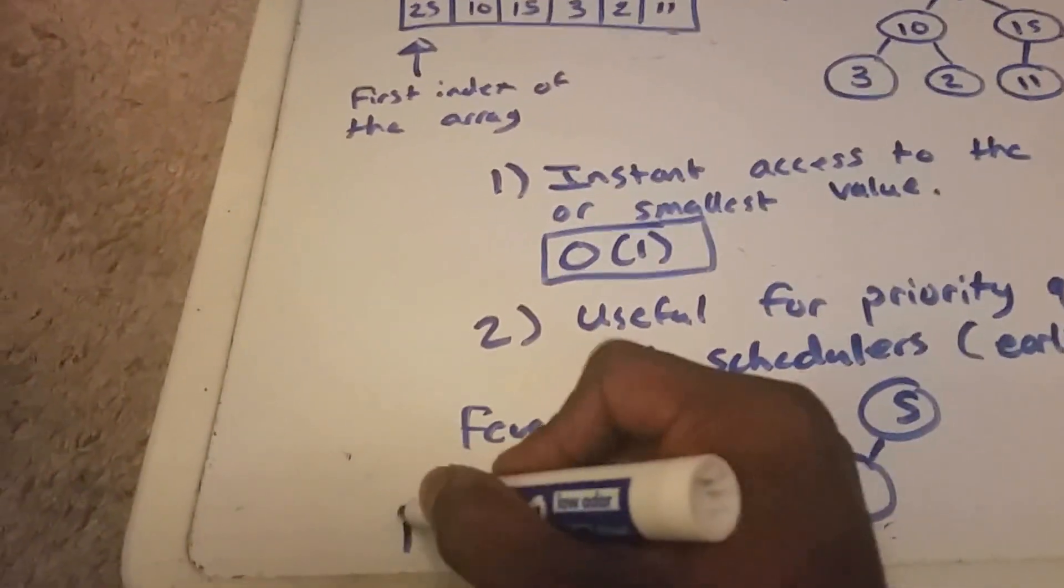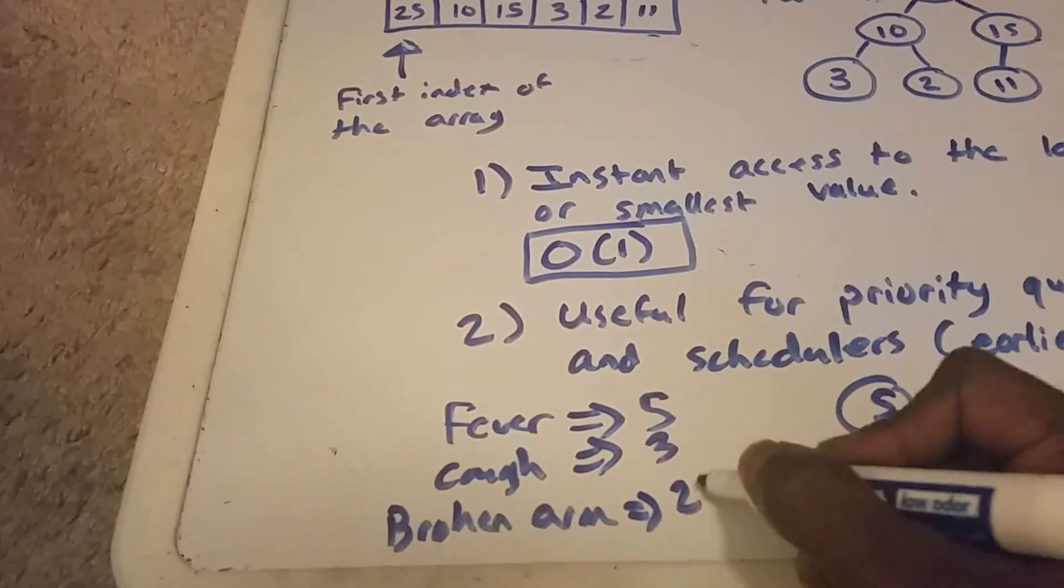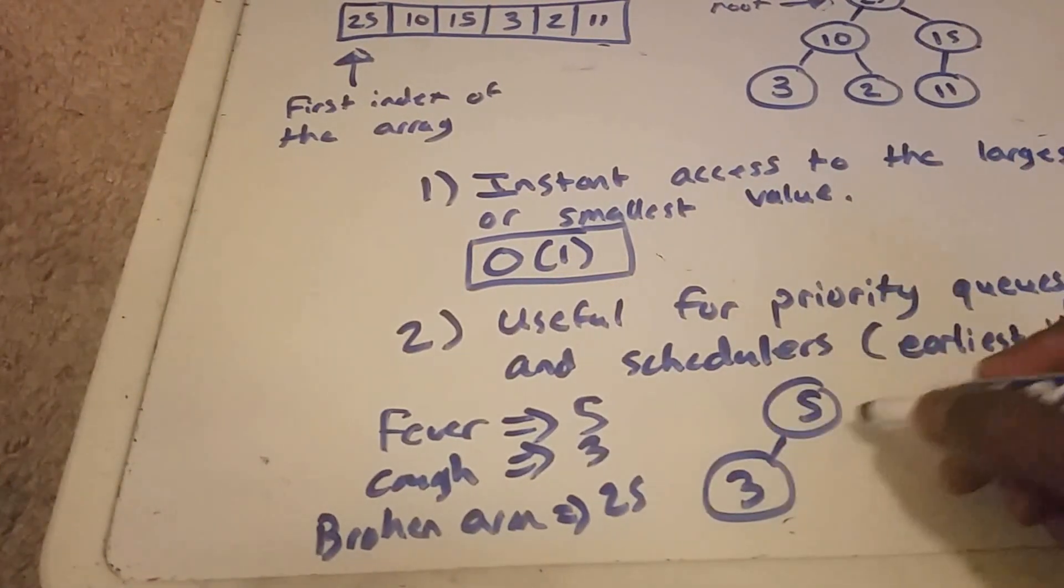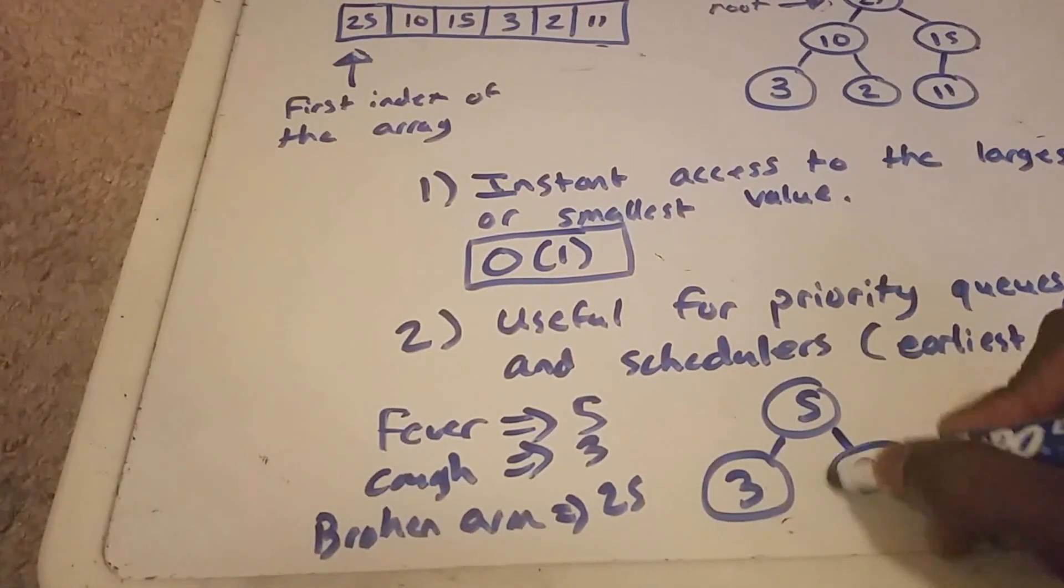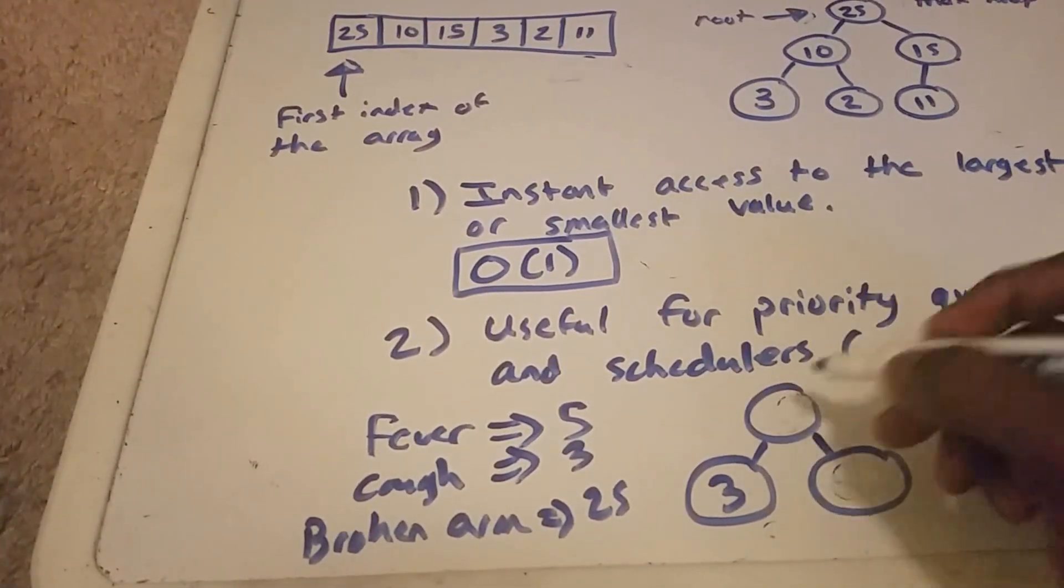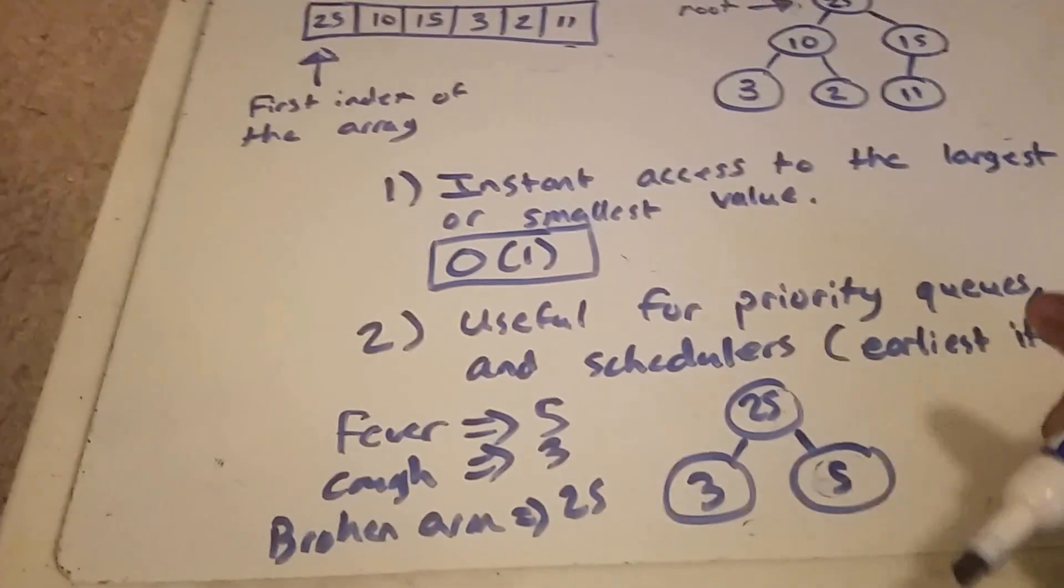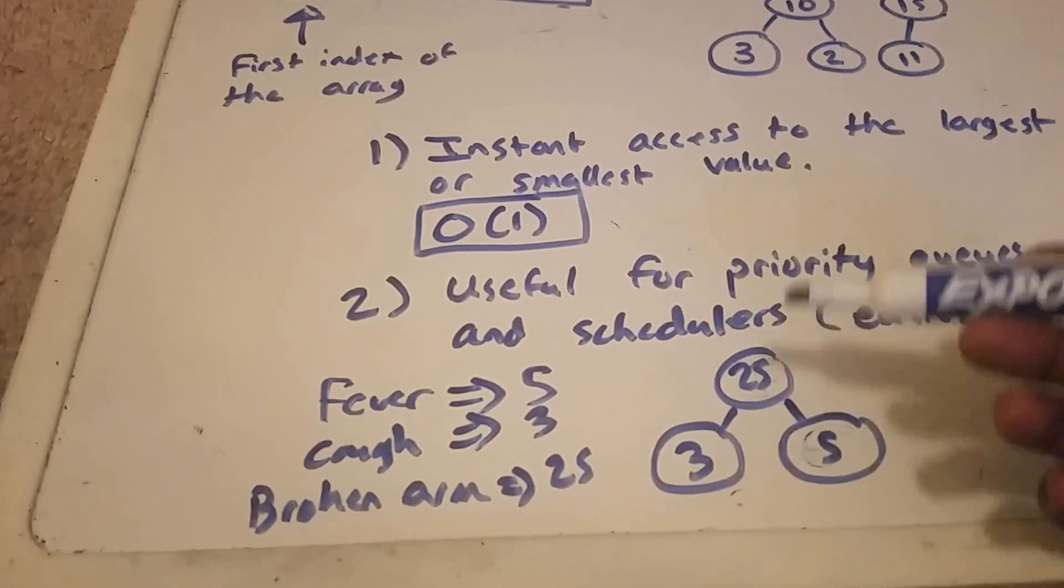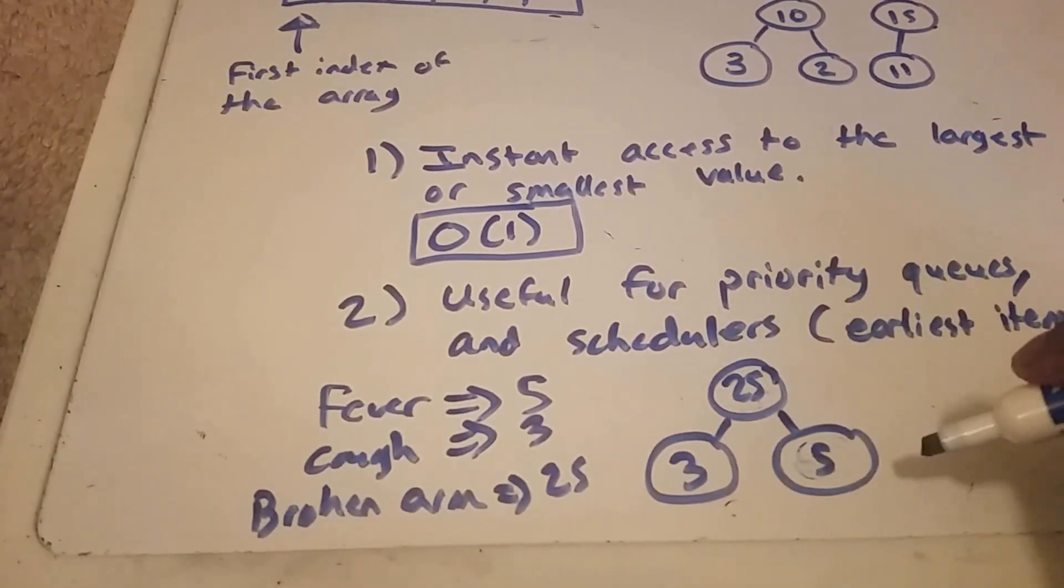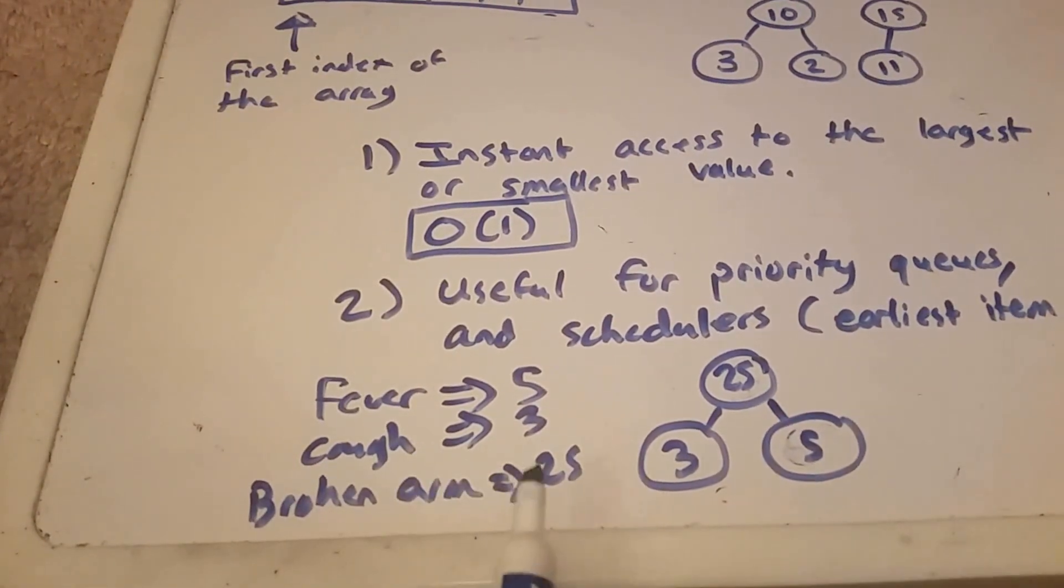But now let's say somebody comes in with a broken arm, and they get a priority 25. So now we haven't helped anybody yet, and this person with priority 25, a broken arm comes in. So that means that these two values are going to swap, 25 and 5. And now when the doctor is ready, and he wants to work on the person with the highest priority, he'll just take the 25 here from the top in constant time, and now we can work on the person with the broken arm.